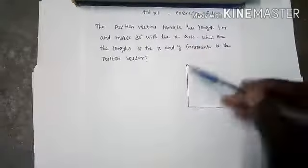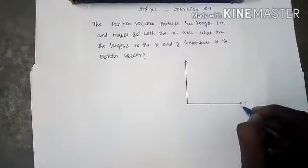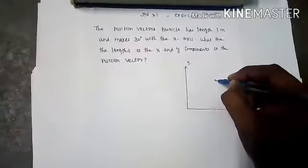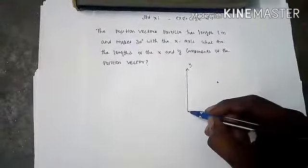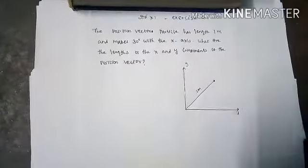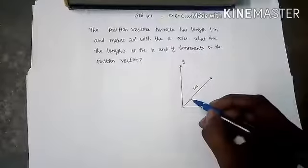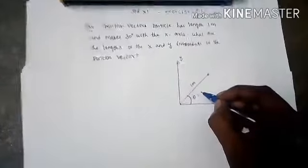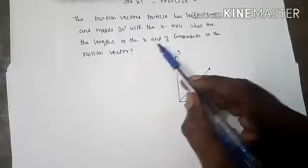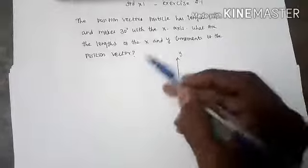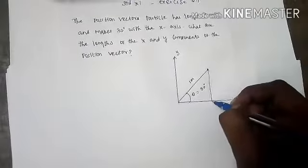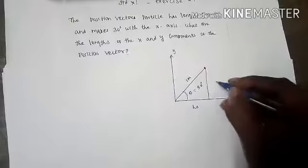Now consider this is the Cartesian coordinate with x-axis and y-axis. This is the point. Draw the position vector from the origin — this is the position vector. Position vector length is 1 meter, making an angle theta equal to 30 degrees with the x-axis. What are the lengths of the x and y components? This is the x component, Lx, and this is the y component, Ly.